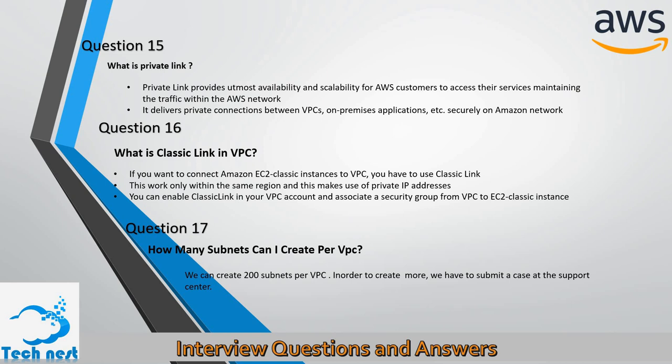Question fifteen: What is Private Link? Private Link provides utmost availability and scalability for AWS customers to access their services while maintaining traffic within the AWS network. It delivers private connections between VPCs and on-premises applications securely on the Amazon network.